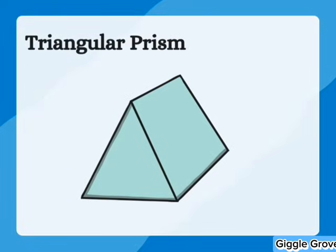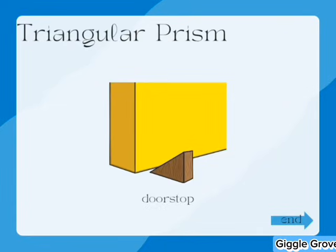A triangular prism is a 3D shape with two triangular ends and three rectangular sides. It looks like a box with triangular ends.